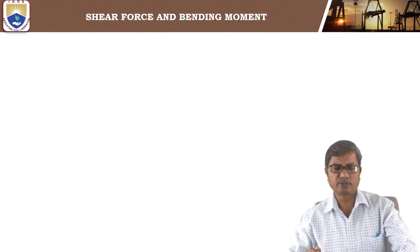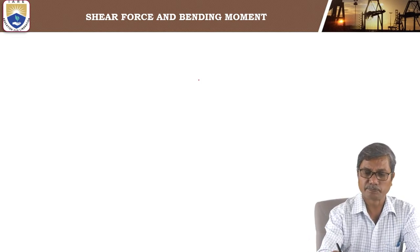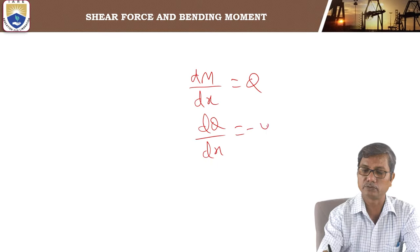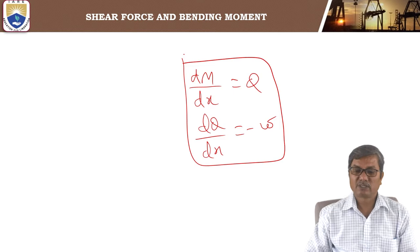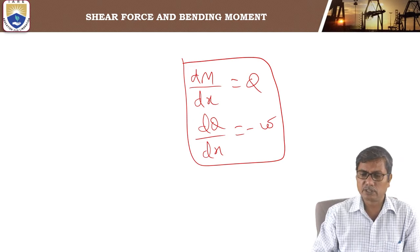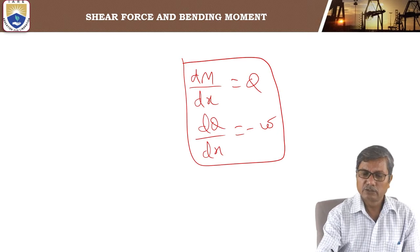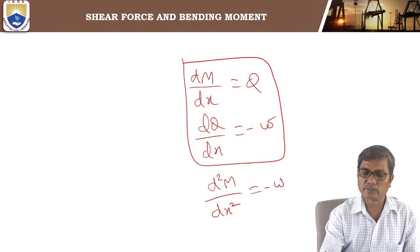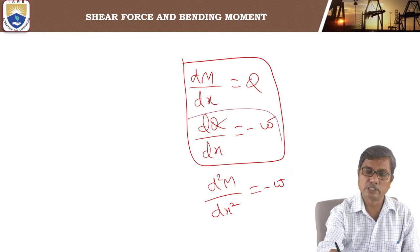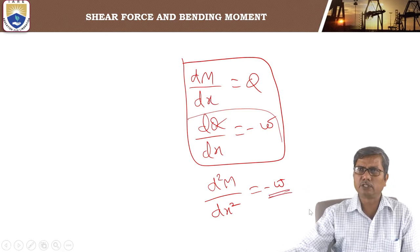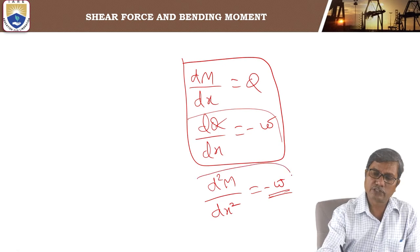The relations are: dM by dx equals Q, and dQ by dx equals minus W. In other words, d squared M by dx squared equals W. The second derivative of bending moment is equal to the rate of loading. These are the relations between bending moment, shear force, and rate of loading.